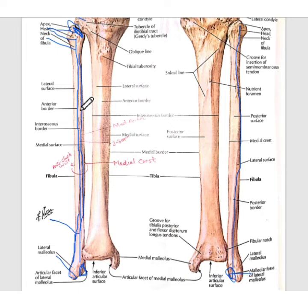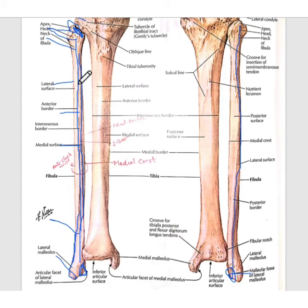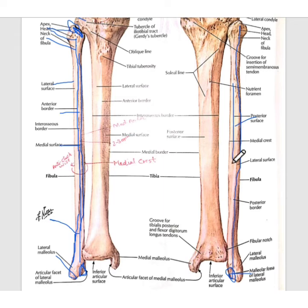There are three surfaces enclosed by these borders. The narrow surface situated between the anterior border and medial border is called the medial surface. The surface between the anterior border and posterior border is called the lateral surface. The third and largest surface is between the medial border and posterior border, called the posterior surface, further divided by a medial crest into two parts.